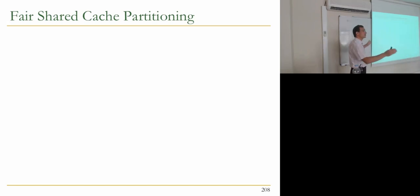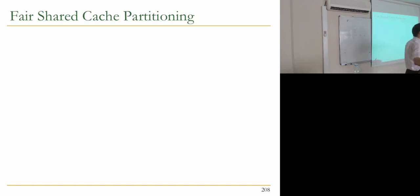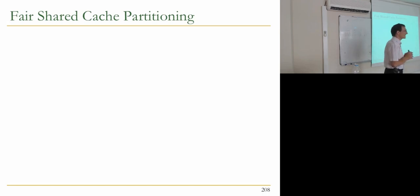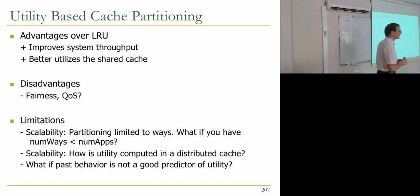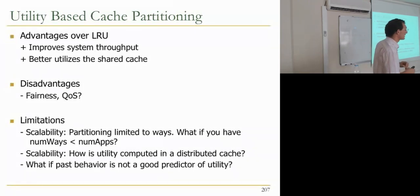Yes, it's profiled based on utility counters. For each way, you track how many hits you've received in that way over 5 million cycles, then the next 5 million cycles you decide based on those counters how much cache to allocate. It's a predictive mechanism — and that may not always work if past behavior is not a good predictor of future utility. This is all hardware.